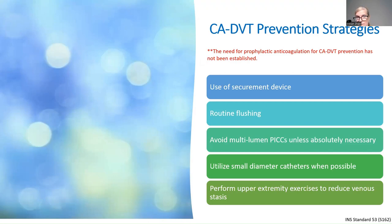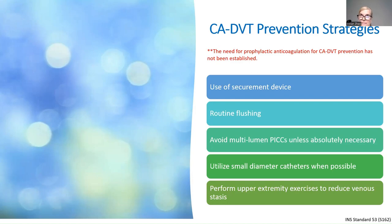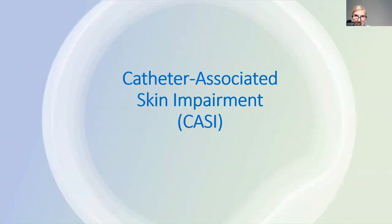CADVT prevention strategies include using a securement device, routine flushing, avoiding multiple-lumen catheters when possible, using smaller diameter catheters, and having patients perform upper extremity exercises to reduce venous stasis. No studies have demonstrated benefit of prophylactic anticoagulants for CADVT prevention.